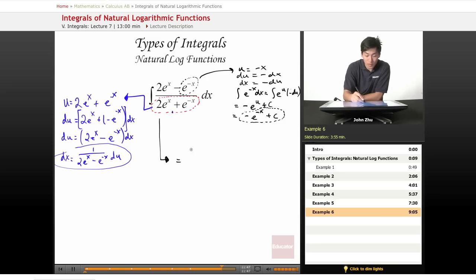Okay, so this equals 2 e to the x minus e to the negative x over u. And dx is 1 over 2 e to the x minus e to the negative x du. Of course, these two terms cancel out.